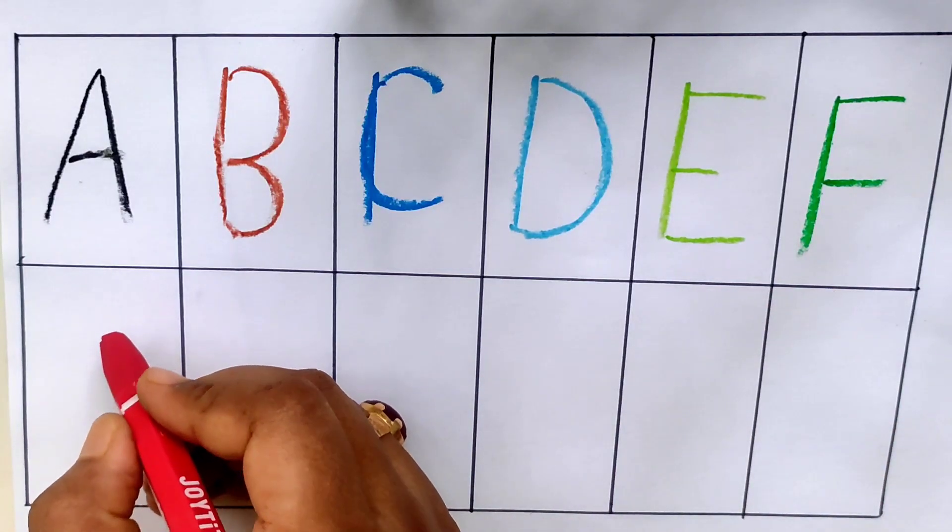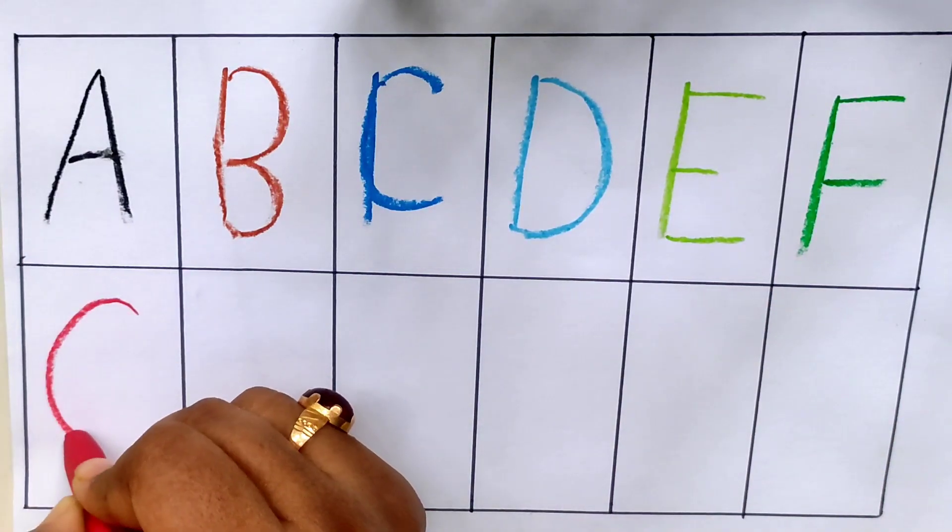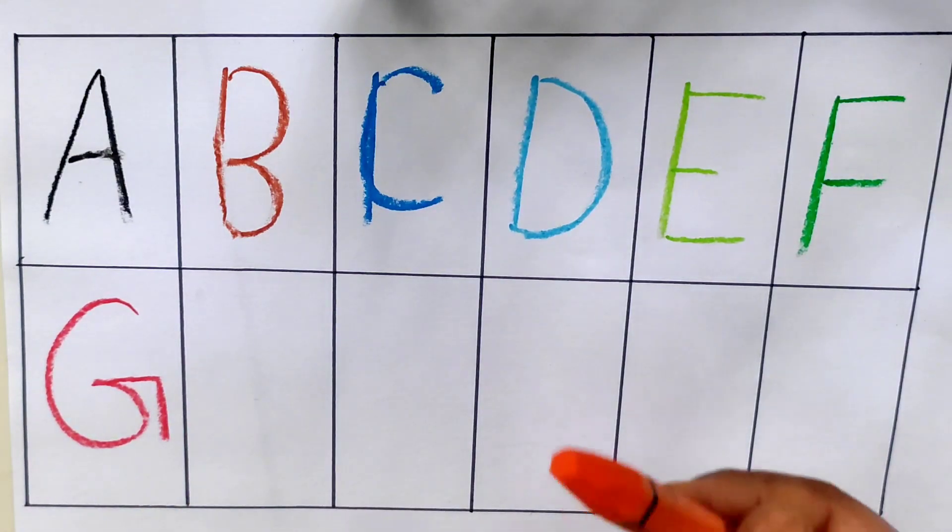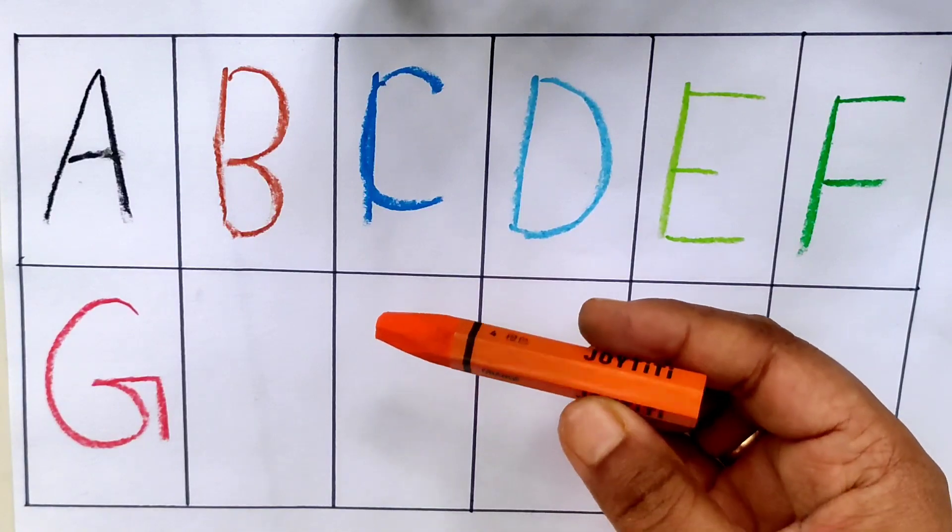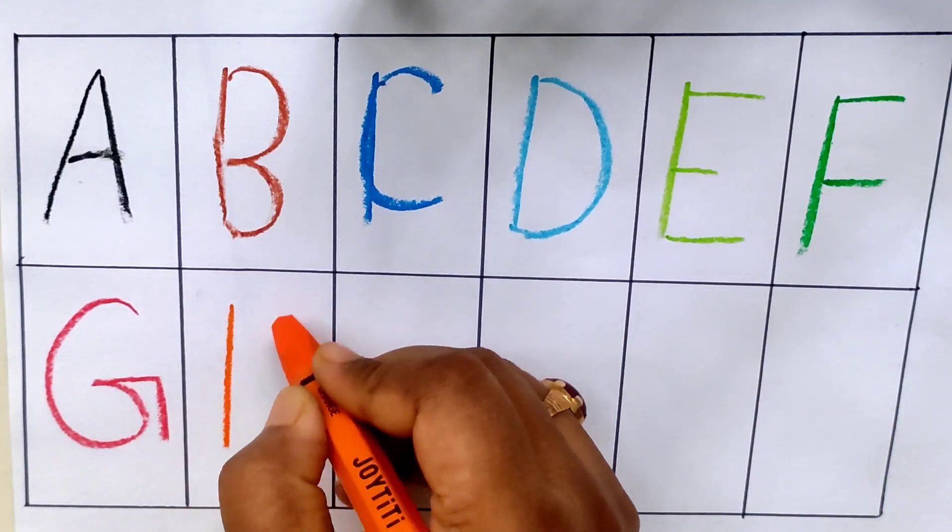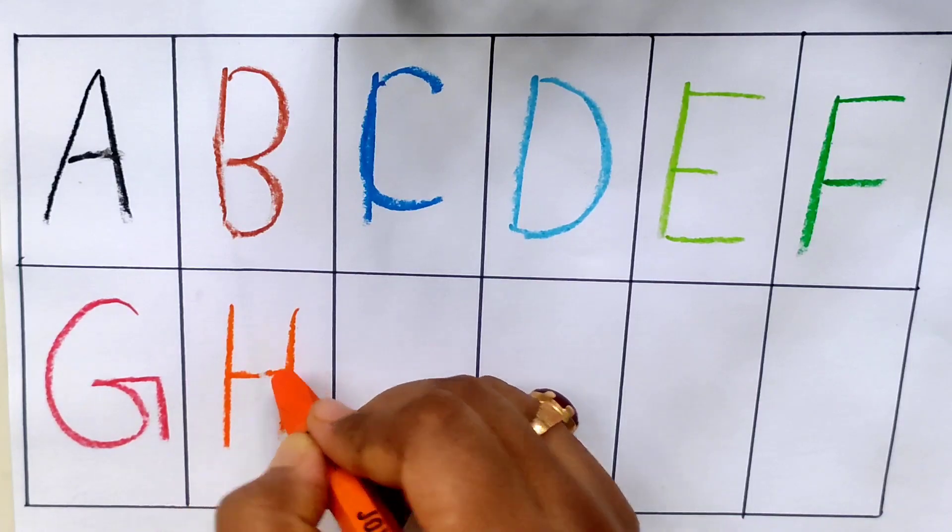Red color. G, g for goat. Orange color. H, h for head.